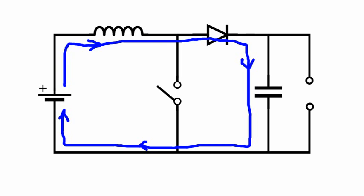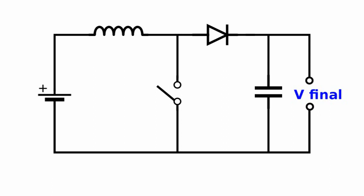But now the switch is opened and the induced current has to flow through the diode and the capacitor. The capacitor charges. Every time we close and open the switch, we are pumping charge into the capacitor and its voltage starts to rise.